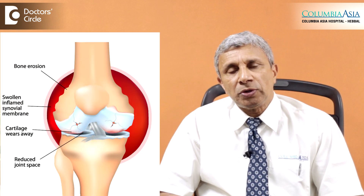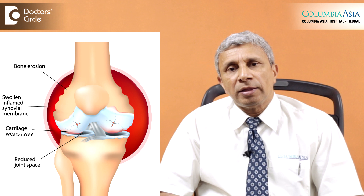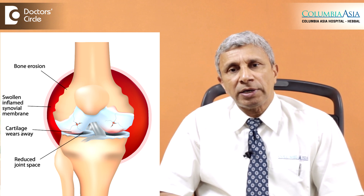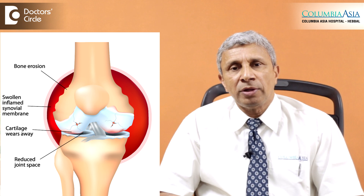The other type of arthritis is what is called inflammatory arthritis, which mainly affects the small joints of the hands and feet. This is due to an inflammatory process caused by the body producing antibodies against certain tissues of the joints, especially the synovium. This causes joint pains and is mainly seen in younger individuals between the ages of 30 and 40 years.